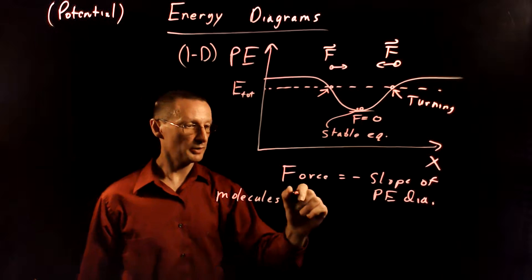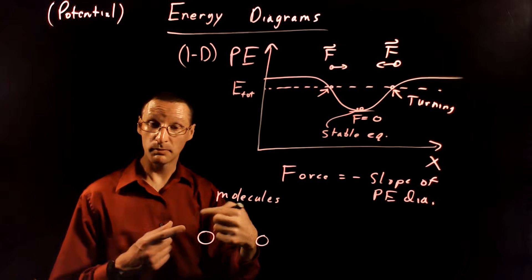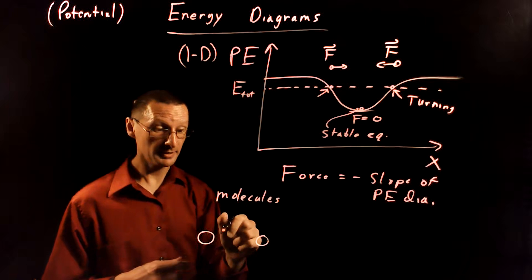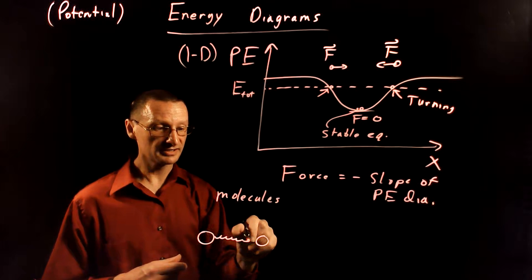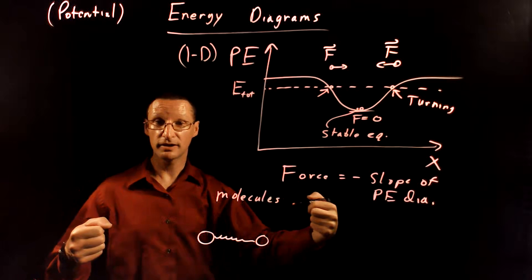Okay, so in that case, you have two atoms that are connected with a molecular bond. And we think of these as like springs connecting them together. So if you get them too close, they repel. And if you pull them too far apart, then they attract.